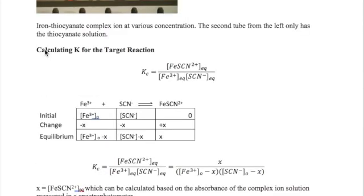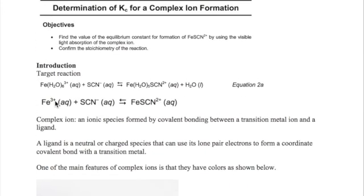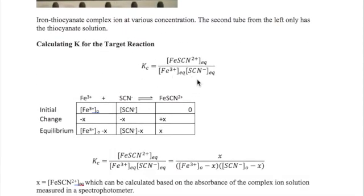Welcome back everyone. In this second video on the equilibrium constant lab, I will discuss how we determine epsilon, or the molar absorptivity constant, by creating a standard curve. You will recall from the first video that to be able to get the equilibrium constant for our target reaction, one of the values we must obtain is the equilibrium concentration of our product, which is the complex ion iron thiocyanate, which has a reddish color.